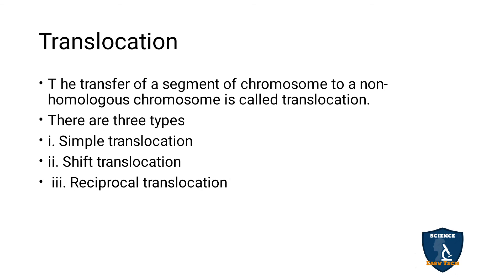Translocation is similar to crossing over, but unlike crossing over which takes place in gametes, translocation occurs in somatic cells as well — so it can be considered an illegitimate crossing over. It involves segments of non-homologous chromosomes interchanging with each other. Translocation is of three types: simple translocation, shift translocation, and reciprocal translocation.